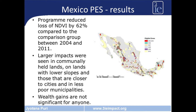The evaluation found that the program reduced loss of NDVI — normalized difference vegetation index — by 62%. This translates into reduced deforestation of approximately 2 hectares for every 100 hectares of plots in the program. Larger impacts were seen in communally held lands, on lands with lower slopes, those closer to cities, and in less poor municipalities. Importantly, the evaluation found that there were no significant wealth gains for anyone.